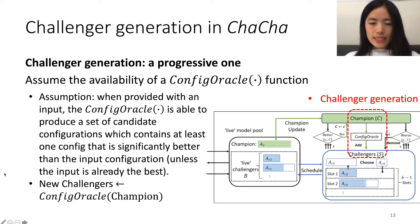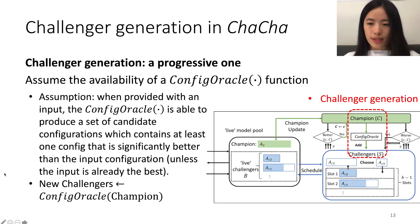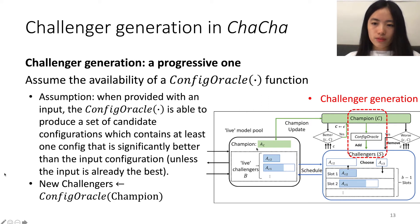Then we can generate new Challengers by calling this Configuration Oracle with the Champion as the input. In this way, we can ensure that it is possible for us to make further progress along our hyperparameter search.